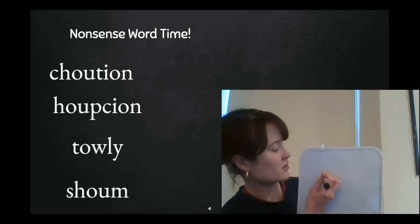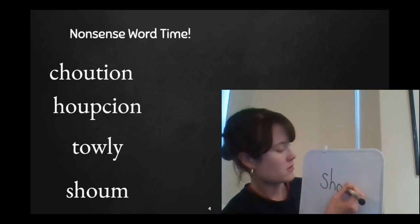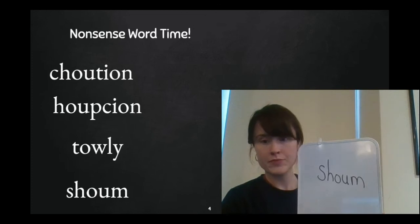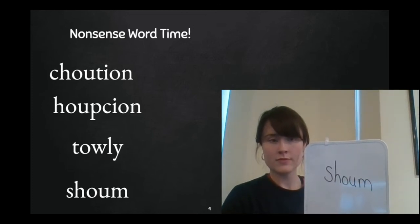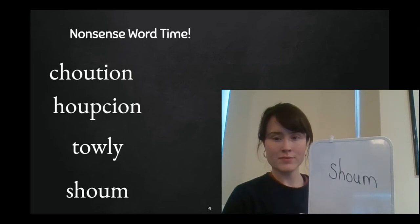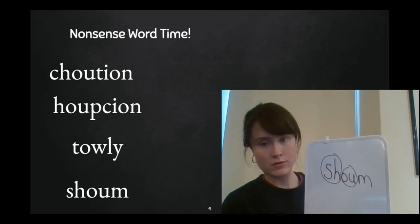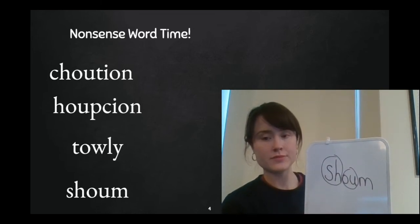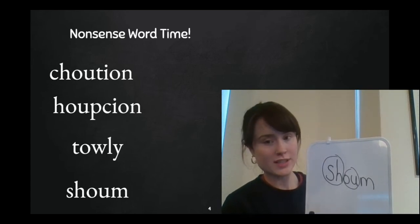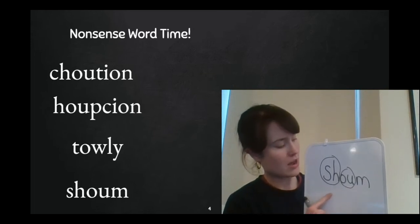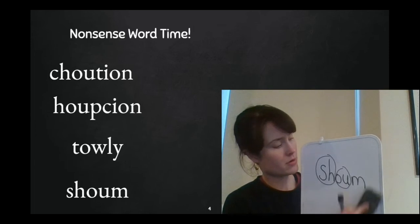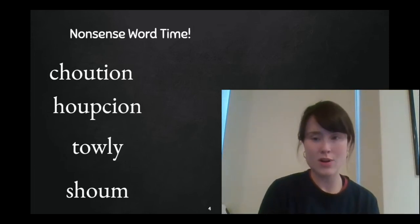And I have one more silly nonsense word for you. Write it on your paper and circle those chunks. All right. What'd you circle? Good. S-H says sh. O-U says ow. Blend it to yourself. All right. Let's blend it together. You ready? Shoum. Say silly shoum.